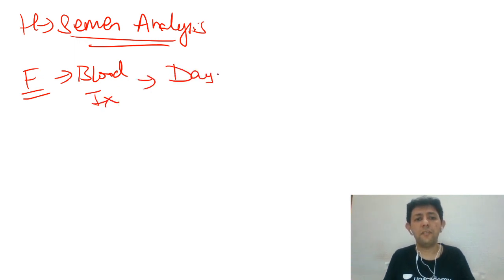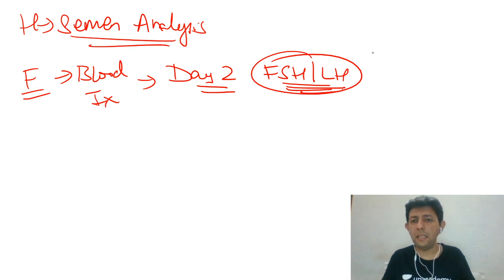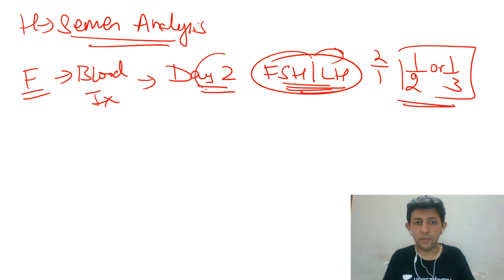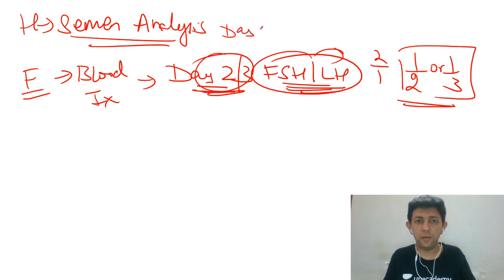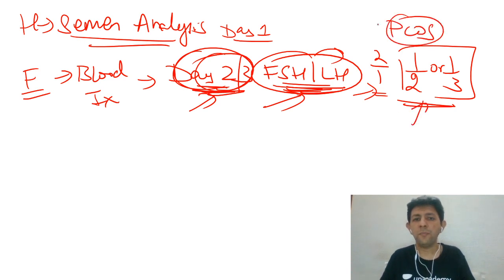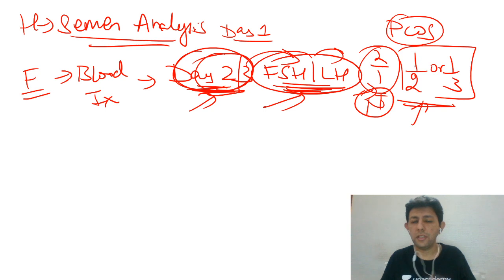Specifically, FSH and LH should be done on Day 2 or Day 3 of the cycle — Day 1 being when menses start. This is a very important and frequently asked MCQ. Normally, the FSH:LH ratio is 2:1. In PCOS, the ratio is inverted — 1:2 or 1:3. This is an important point to remember for entrance examinations.